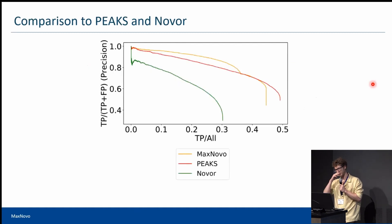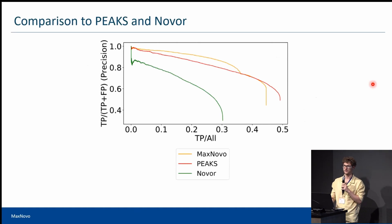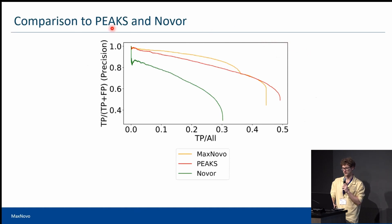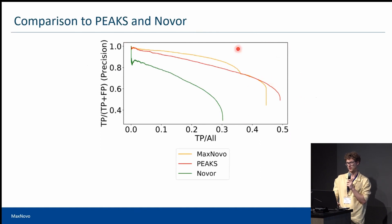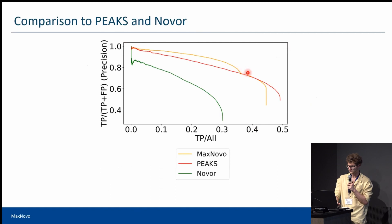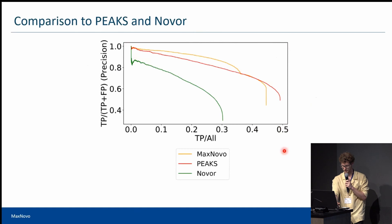We further compared our de novo algorithm to other de novo algorithms and found that MaxNova performs most closely to PEAKS. While PEAKS has better coverage, MaxNova has better overall precision, as you can see from the precision-coverage plot.